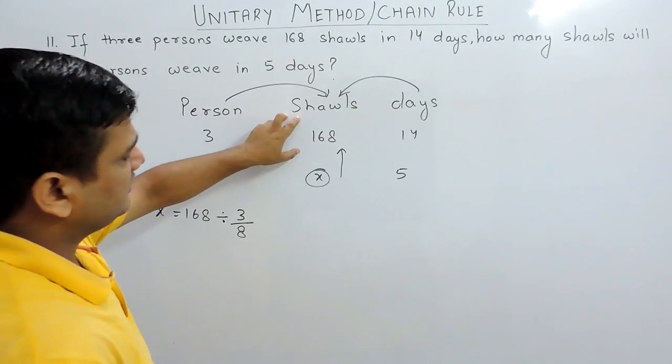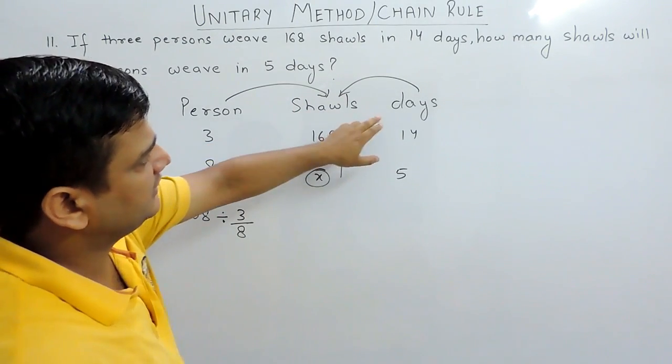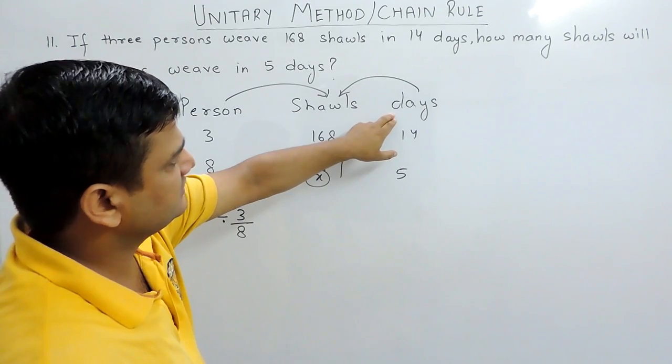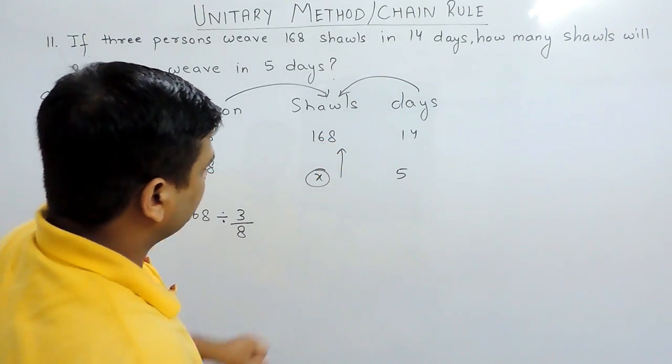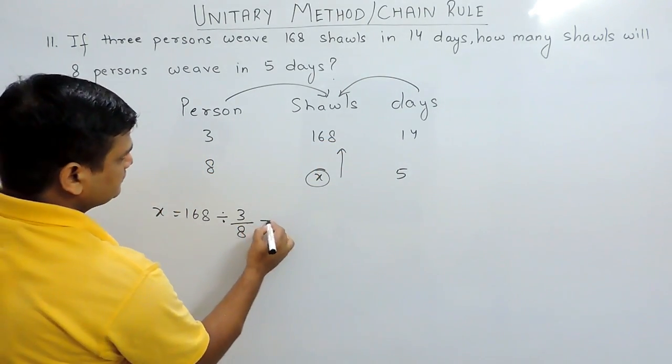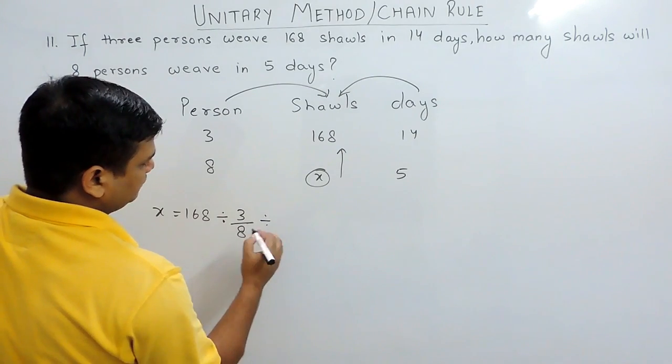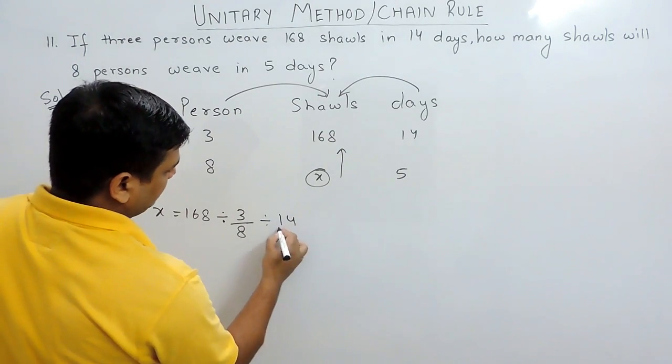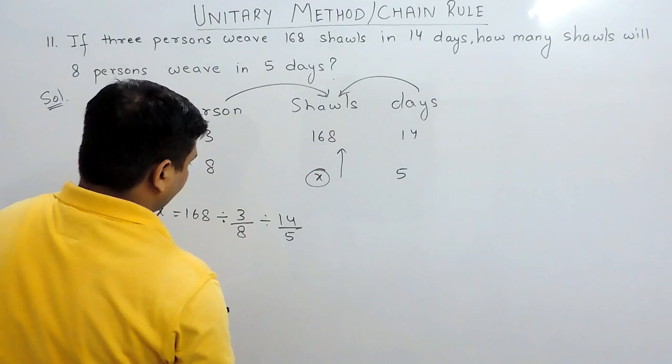If we weave more shawls, then days taken by us is also more. Therefore, the relation here is also direct. So we put divide sign again and it is 14 by 5.